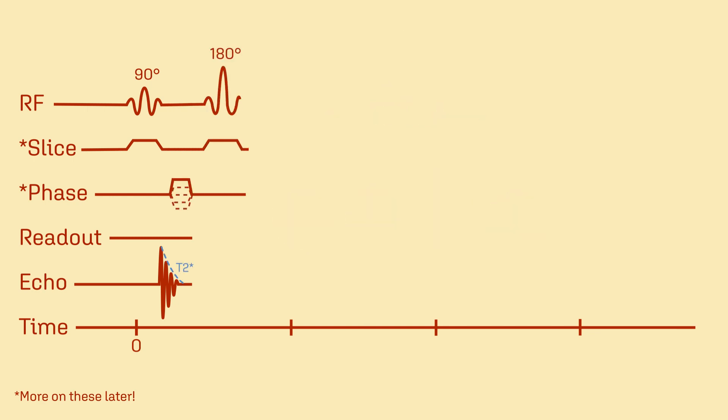A 180-degree refocusing pulse temporarily rephases proton precession, producing an echo which can be read out by the MR scanner. The moment that the echo is produced is called the TE, or time to echo.